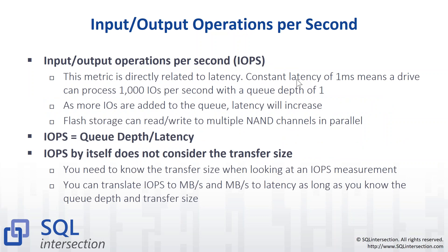Input-output operations per second, or IOPs, is related to latency. If you've got a constant latency of one millisecond, that means you can do a thousand IOs per second with a queue depth of one, which is not really a typical server workload. As you add more concurrent IOs, your latency tends to increase — not so much with flash storage compared to magnetic storage. IOPs is just the queue depth divided by the latency. It doesn't tell you the transfer size, whether it's a 4K like a lot of benchmark tools use, or an 8K transfer like SQL Server uses. You can translate between IOPs and megabytes per second as long as you know the queue depth and/or the transfer size.